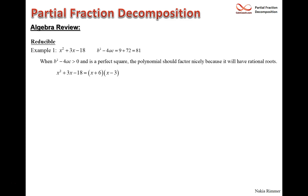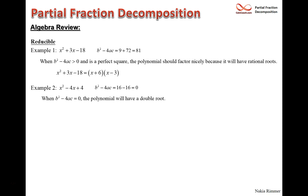If b² - 4ac = 0, like in x² - 4x + 4, you get a double root because plus or minus the square root of zero is just zero. That polynomial factors as (x - 2)².